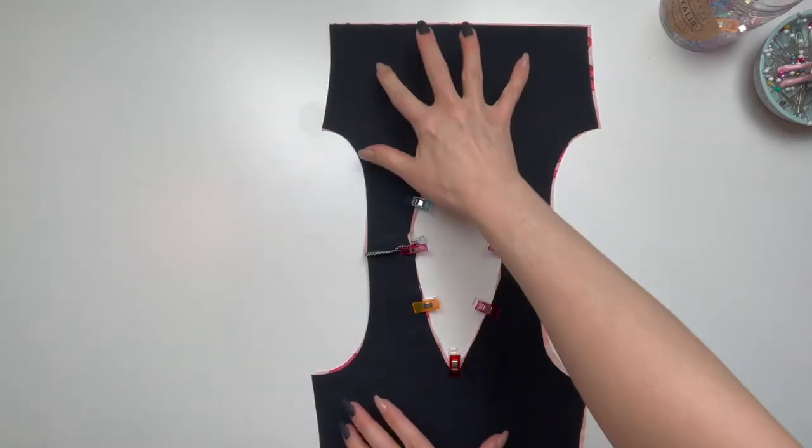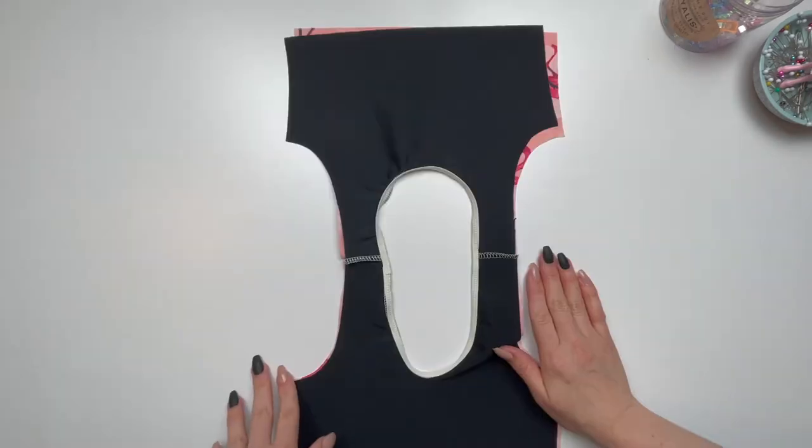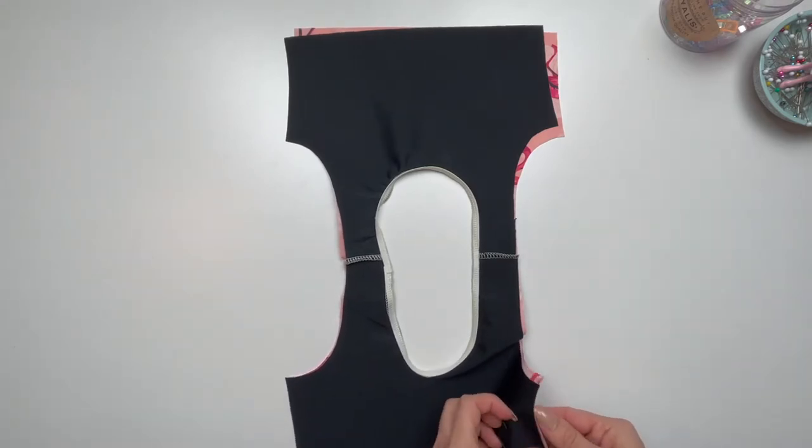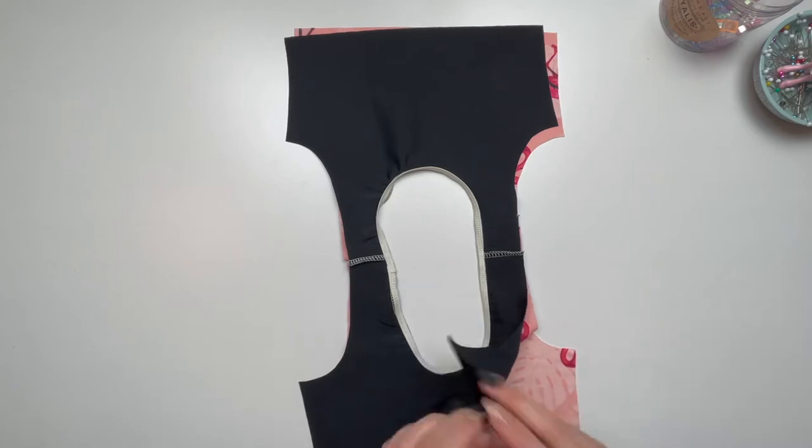Sew or serge to complete the seam. To begin the burrito roll method, separate the bodices and face them both right sides out.